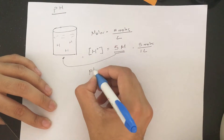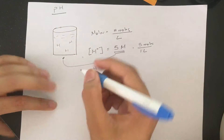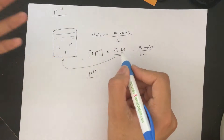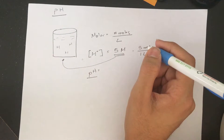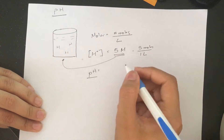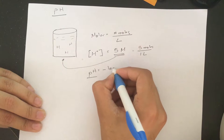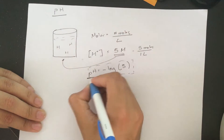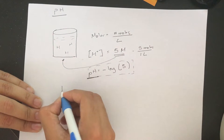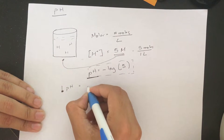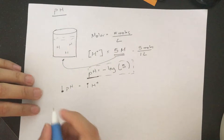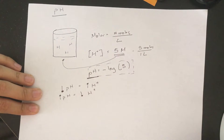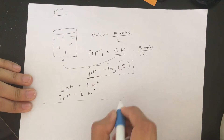pH is another way to express how much hydrogen there is. People use pH because hydrogen values can get really unwieldy — like 10 to the negative 37 or 10 to the 54 — so it's just an easy way to keep track. Basically, you take the negative log of the hydrogen concentration. A low pH corresponds to high hydrogen ions, and a high pH means there are fewer hydrogen ions — so it's a negative correlation.